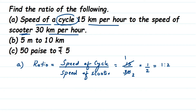For the second question, it is 5 meters to 10 kilometers. As I said before, the units must be the same, but here they are not. We need to make them the same — you can either convert everything into kilometers or into meters. I'm going to convert everything into meters, so we convert 10 kilometers. We know that 1 kilometer is equal to 1000 meters.